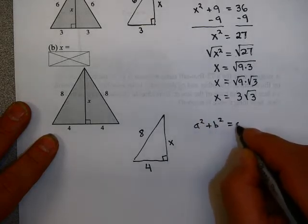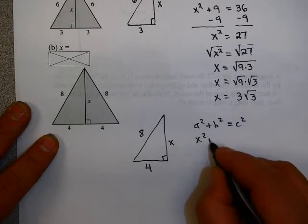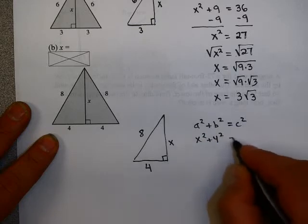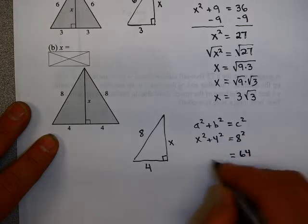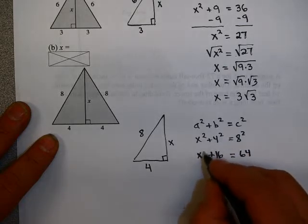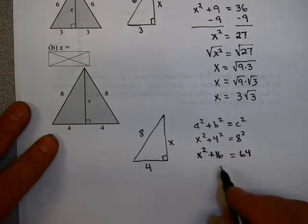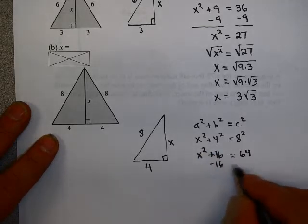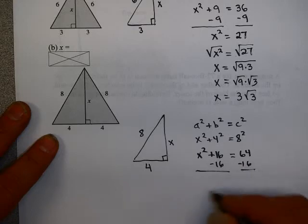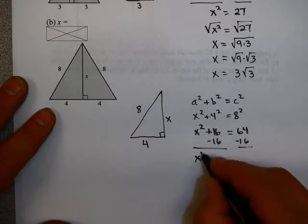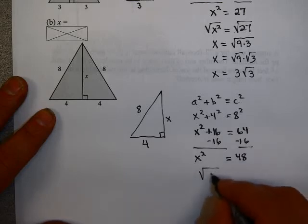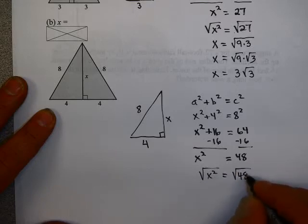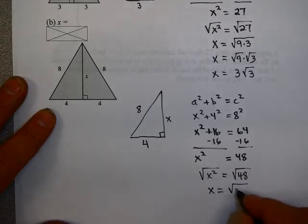a squared plus b squared equals c squared. x squared plus 4 squared equals 8 squared. 8 squared is 64. 4 squared is 16. x squared is just x squared. Now, subtract 16 from each side. And that gives you x squared equals 48. Take the square root of each side.